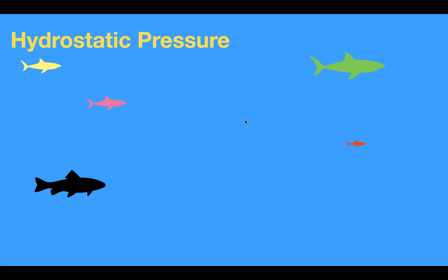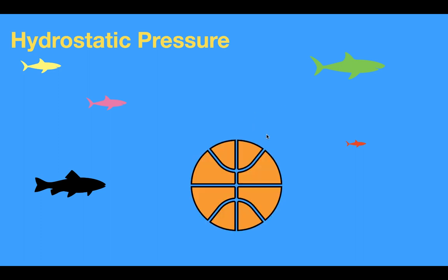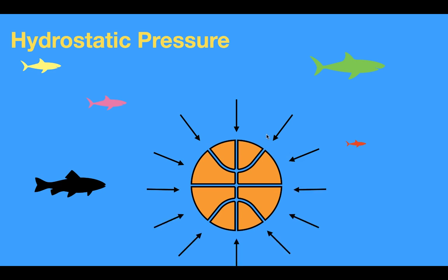Let's just say we have a ball that is submerged in the ocean. Now let's say that the pressure exerted on the ball is going to be equal at all points. The ball is submerged at the bottom of the ocean, and the water around the ball is exerting pressure on the ball, and the pressure is equal at all points. The pressure inside the ball is around 10 units, and the pressure outside the ball is also 10 units.